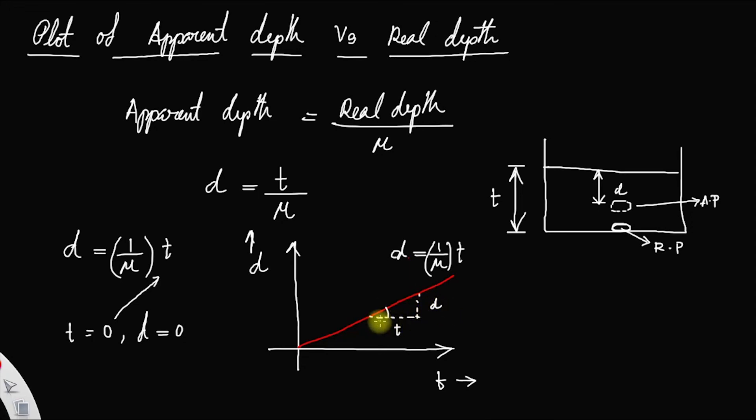This one is slope. This is the slope and consider this angle as theta. You have tan theta is equal to d divided by t. What is d by t? From this equation, you have d by t is equal to 1 by mu.